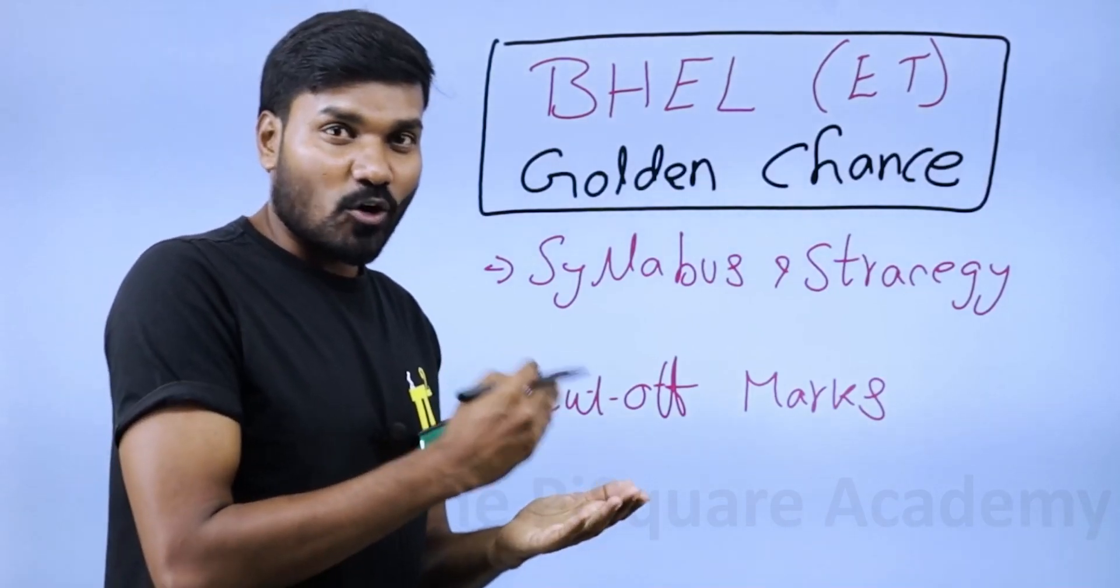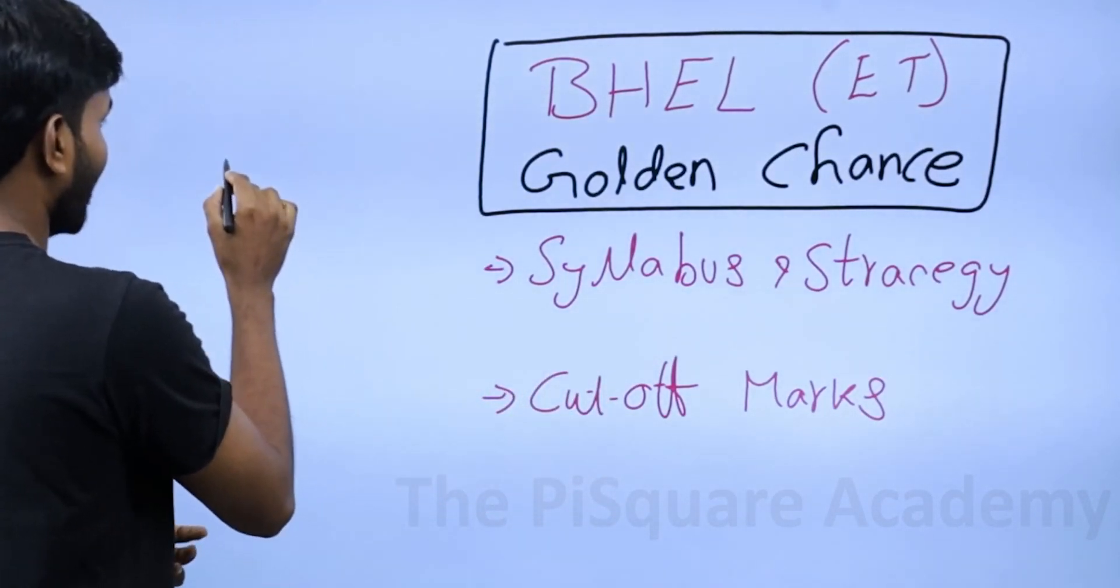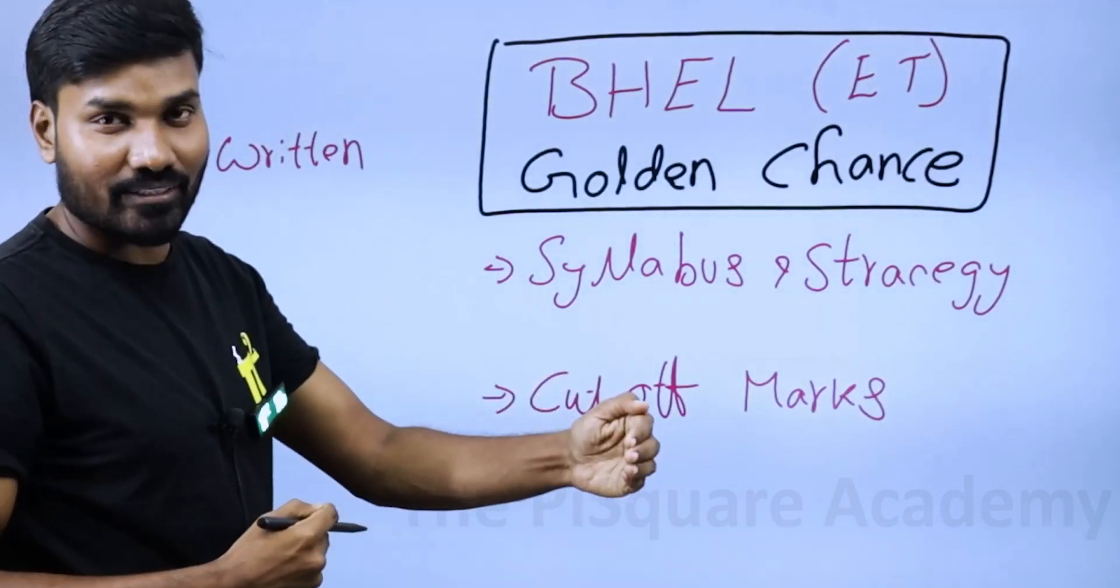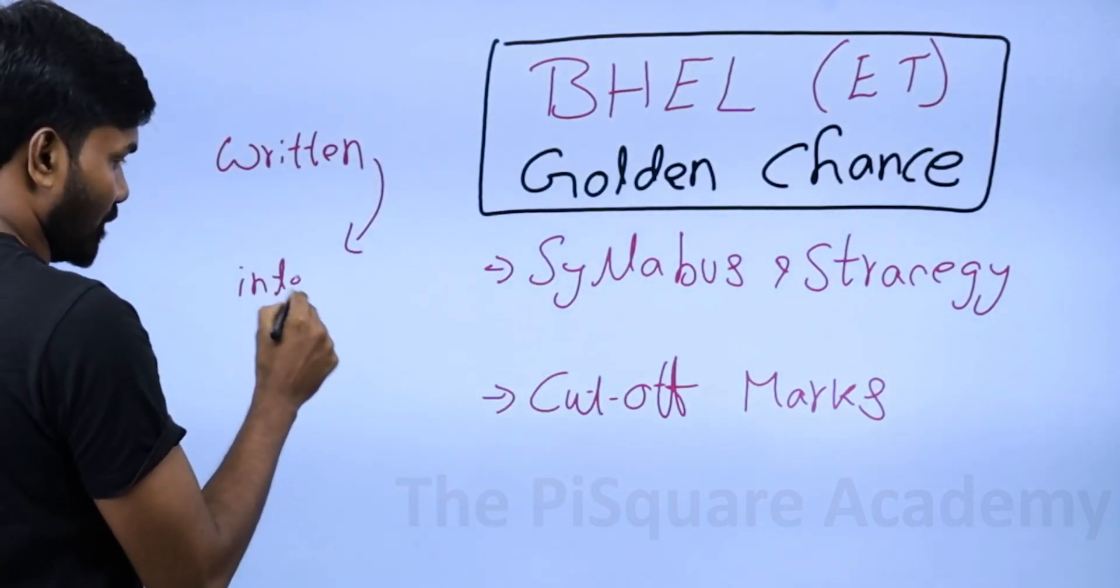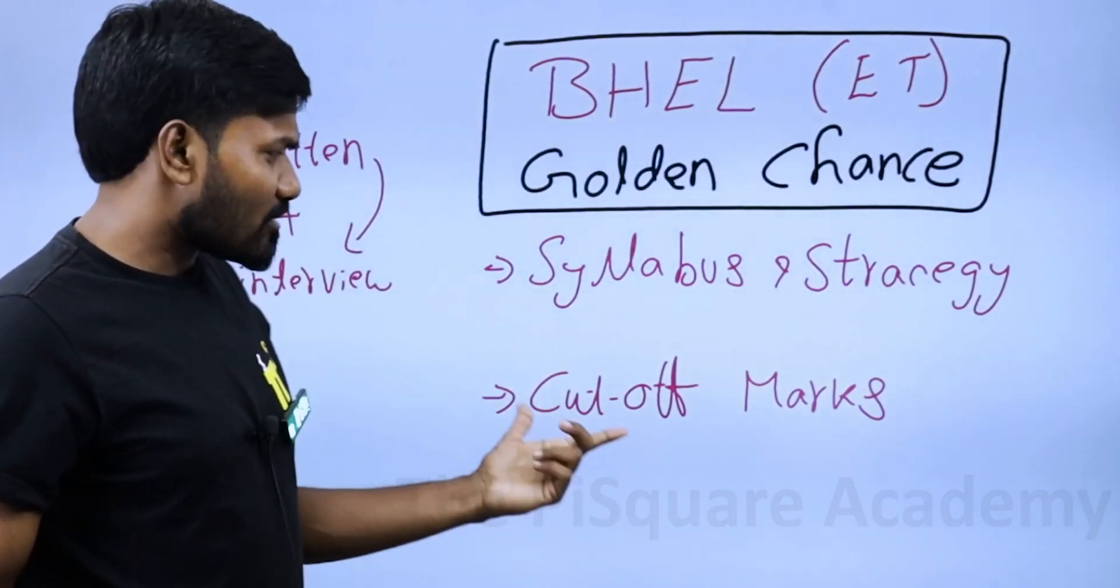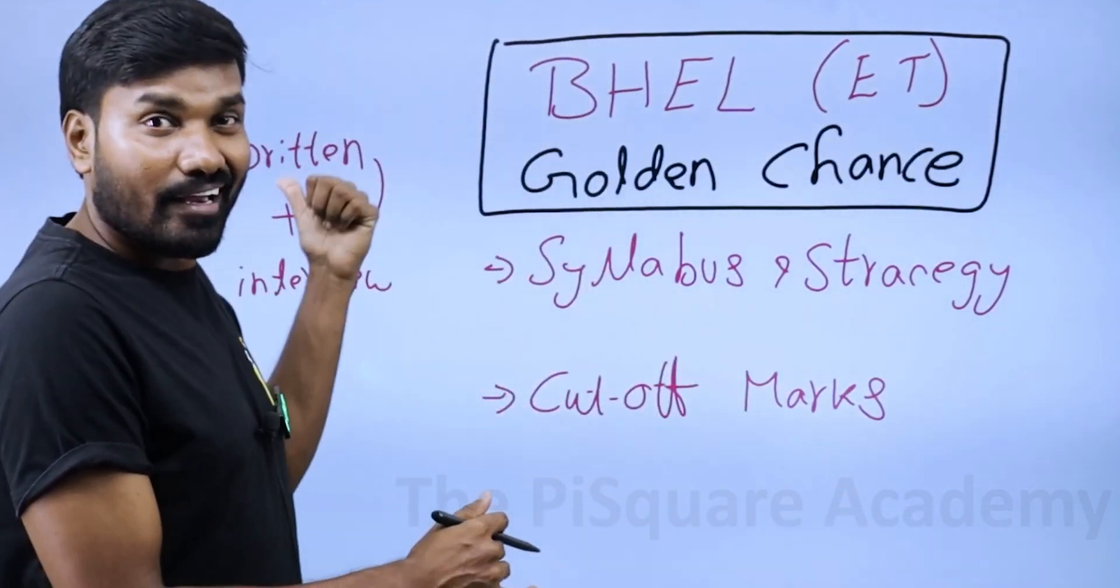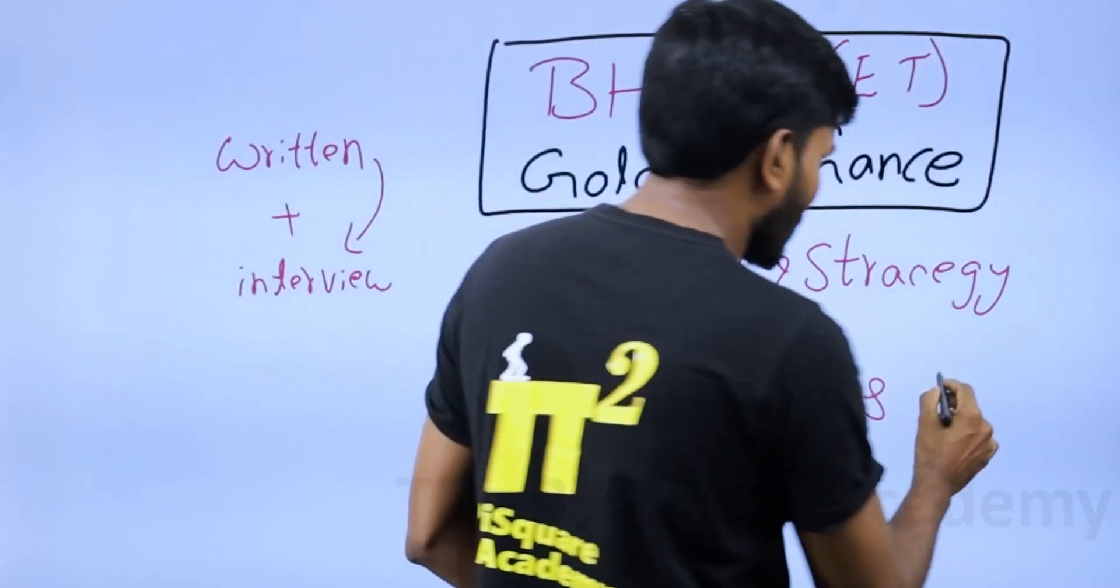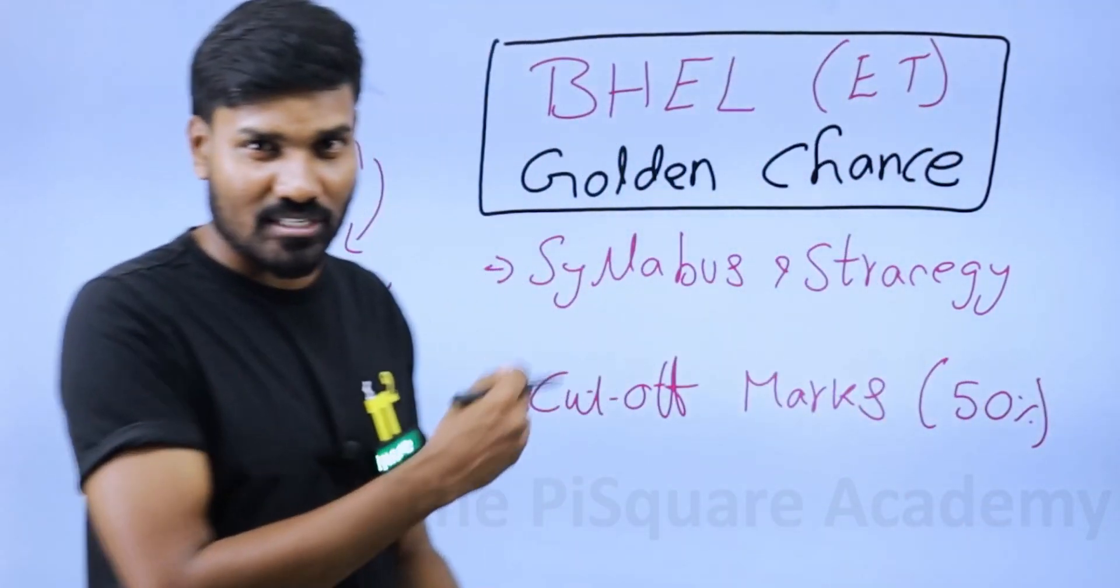I'll tell you why it is a golden chance. Because the shortlisting process has two rounds - a written test, then after the written test, those who qualify will be called for the interview for final selection. You know what the qualifying mark for this cutoff is? It is as low as 50%. That's from the previous record. I'll show you the statistics as well.